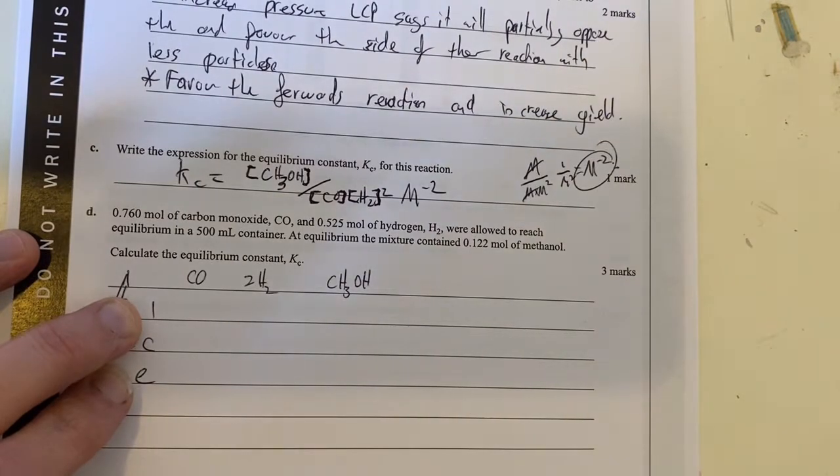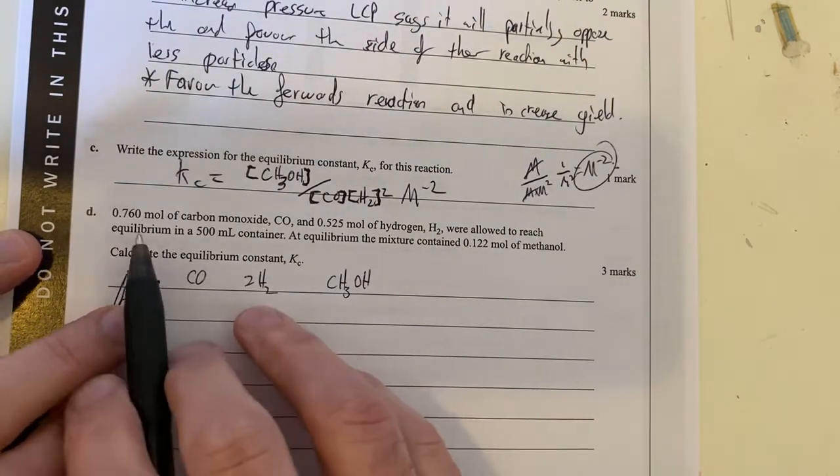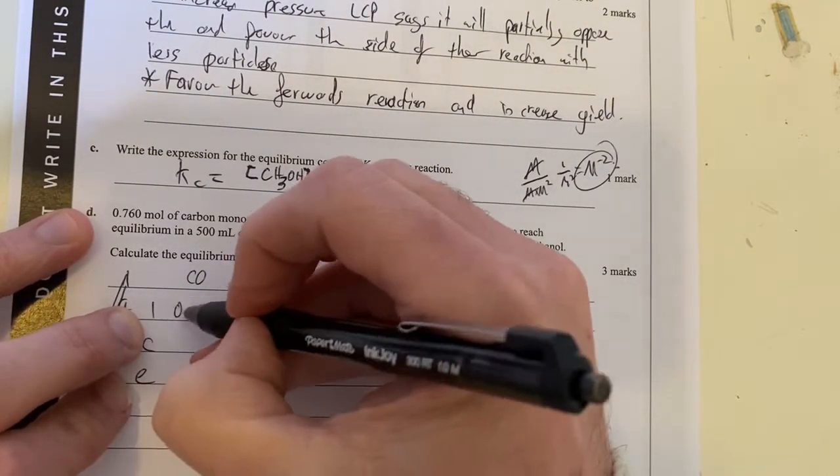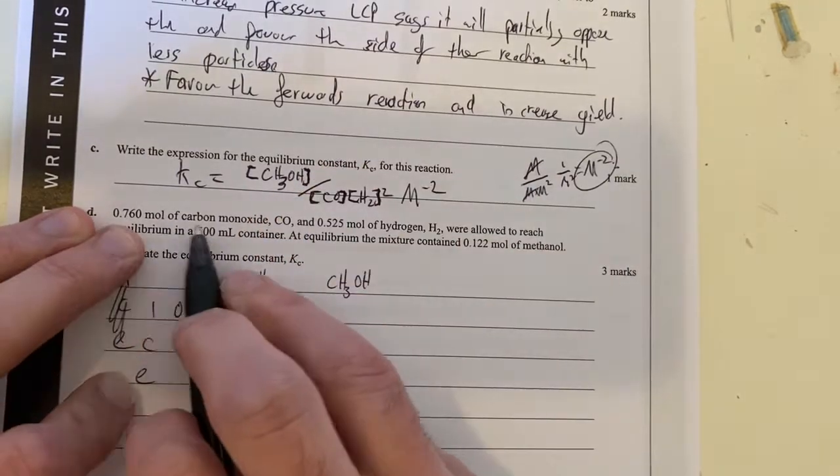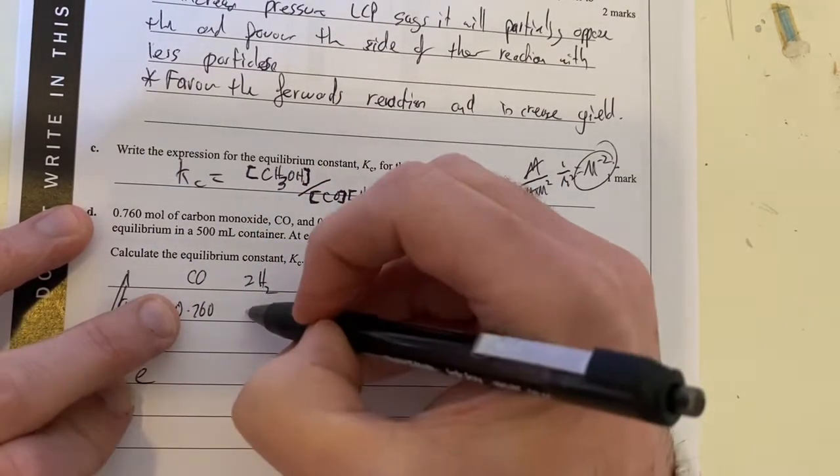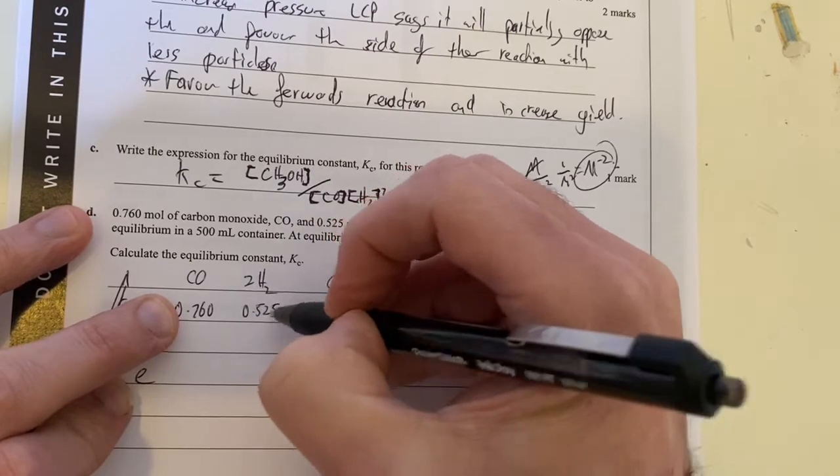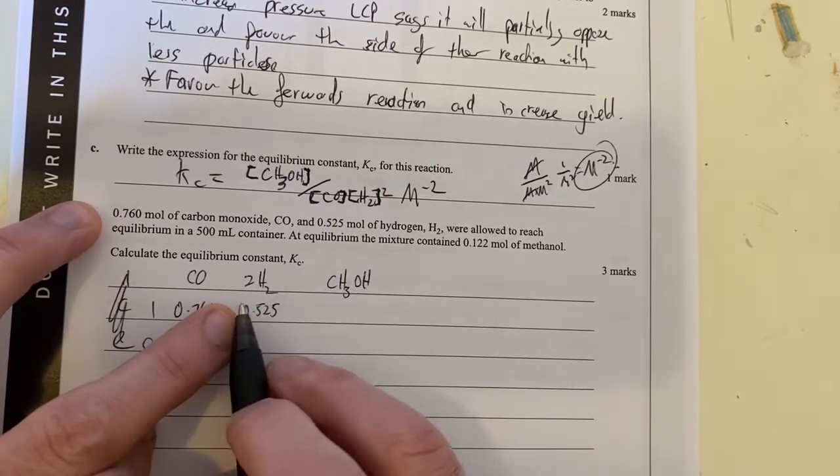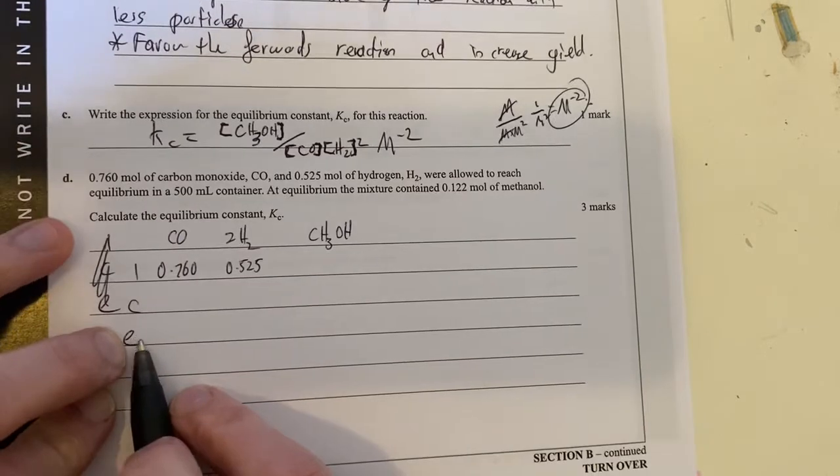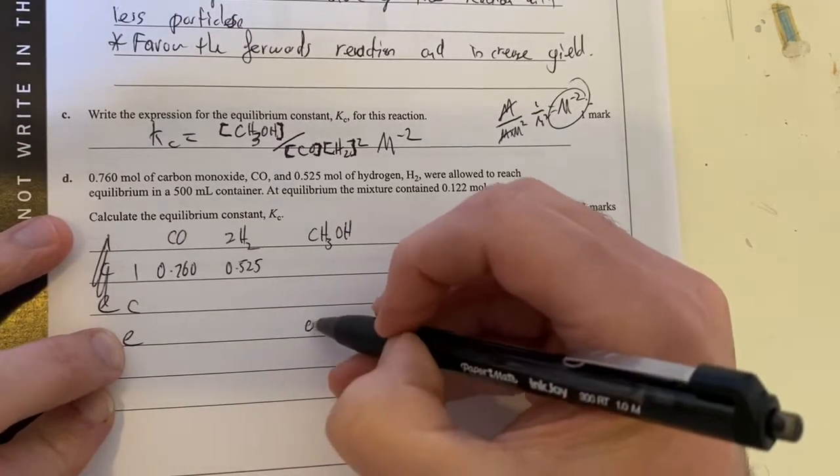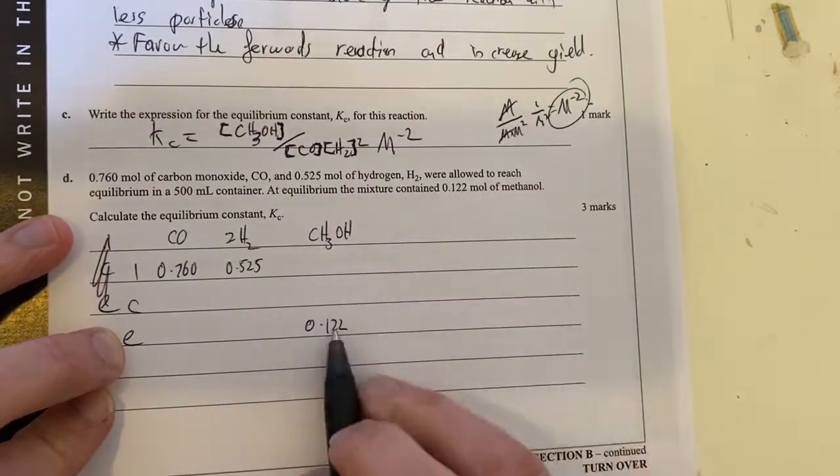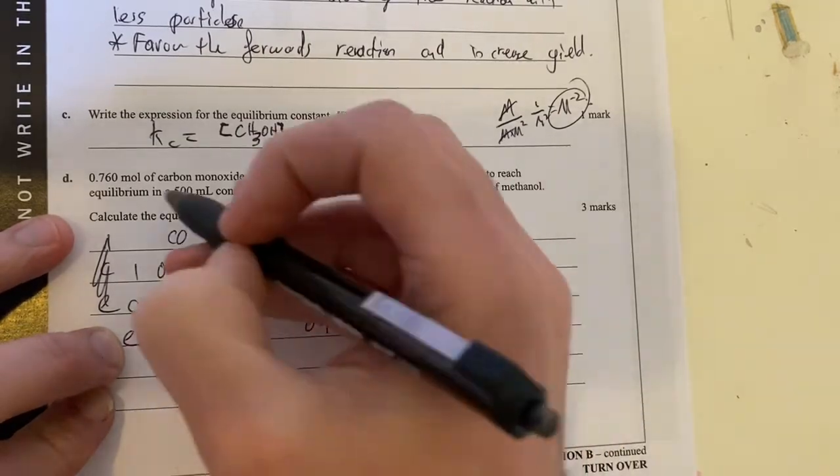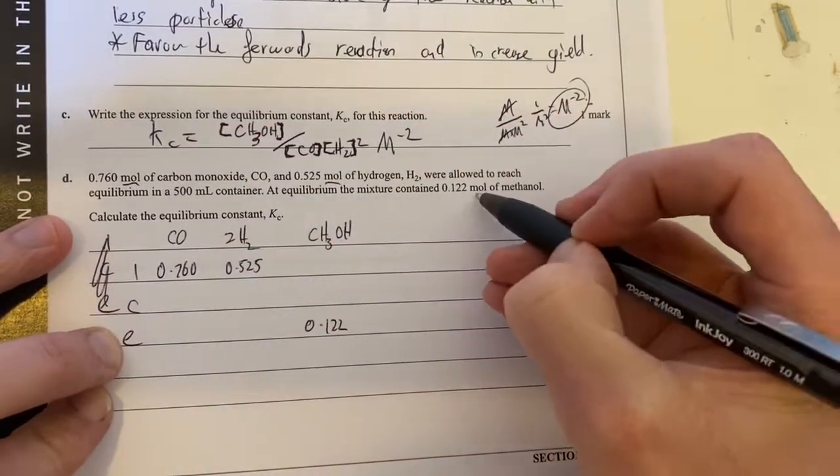And therefore, what do we have? We're starting off with 0.76 mole of carbon monoxide, and we're starting off with 0.525 mole of hydrogen. And at the end of the day, at equilibrium, we're going to reach 0.122 mole of methanol. Again, I'm checking the fact that they're all moles. That's all good.